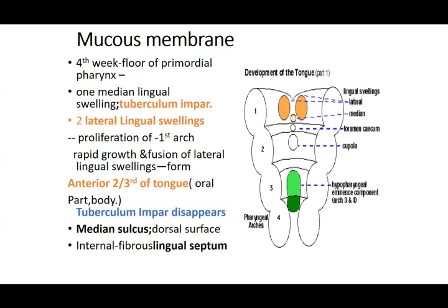From the first arch, on either side of the tuberculum impar, two lateral swellings arise — the two lateral lingual swellings. Proliferation occurs in these lateral lingual swellings; they grow and fuse together, forming the anterior two-thirds of the tongue. The medial swelling, the tuberculum impar, then disappears.